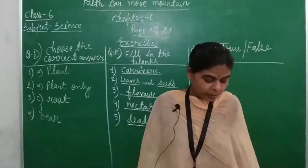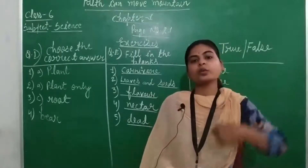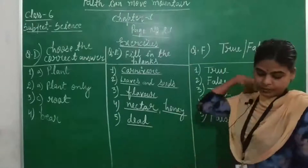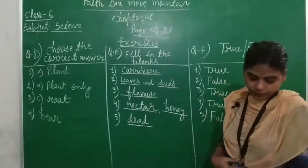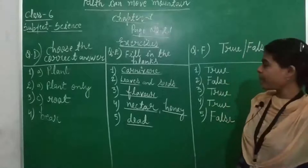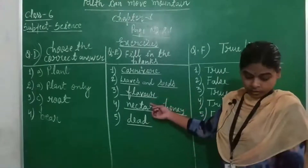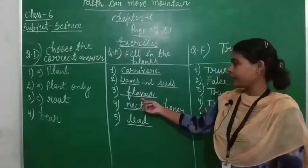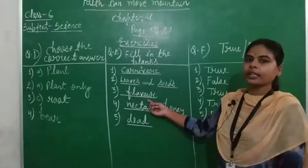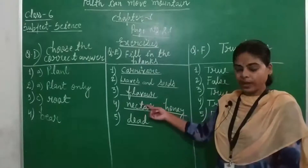Third blank: spices are used to add — why do you add spices to any food item? To add flavor, a specific taste, and a specific aroma. So fill in 'flavor'.